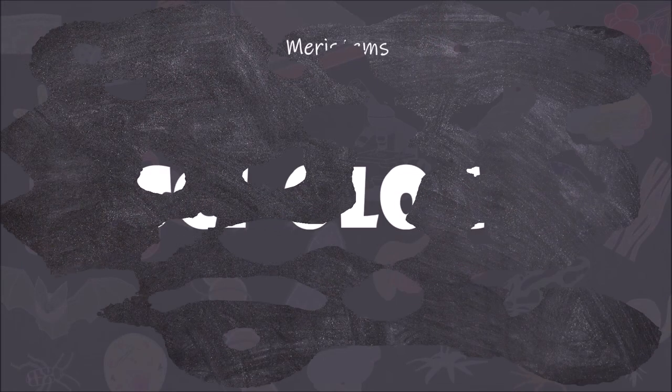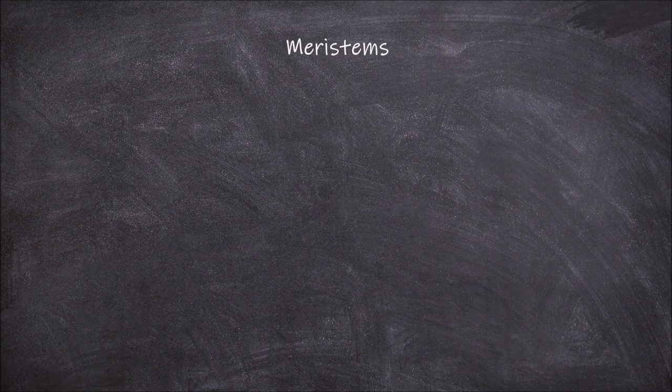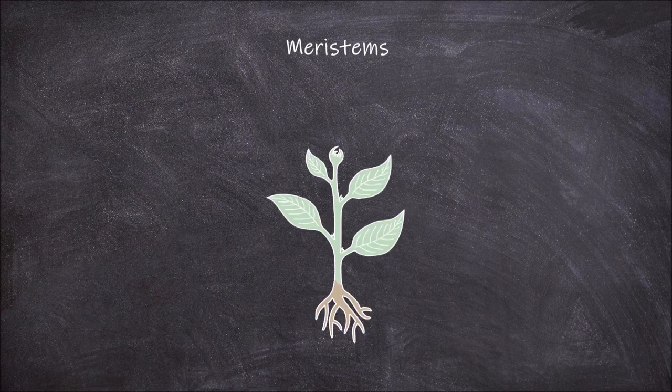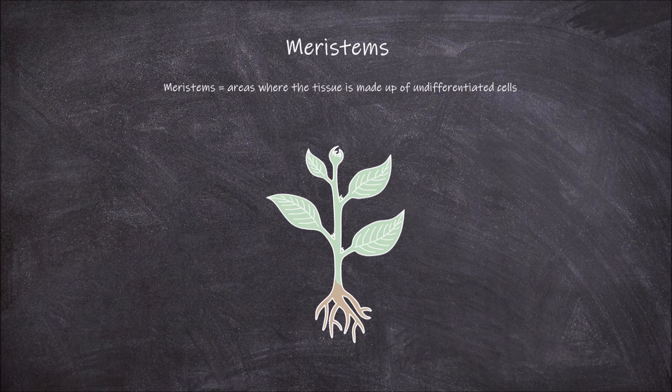Welcome back to my channel. In this video we're going to go over the different types of meristems that can be found in plants. Meristems are areas in a plant where the tissue is made up of undifferentiated cells, also known as meristematic cells. These cells are capable of cell division and eventually differentiation into a specific tissue type that makes up the different tissues of the plant.